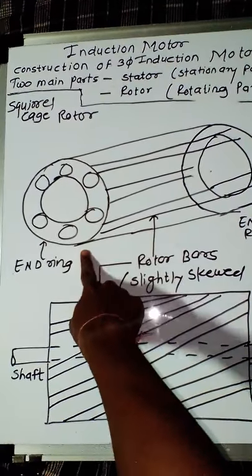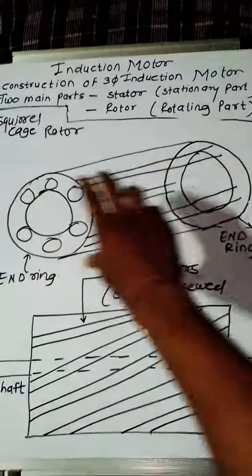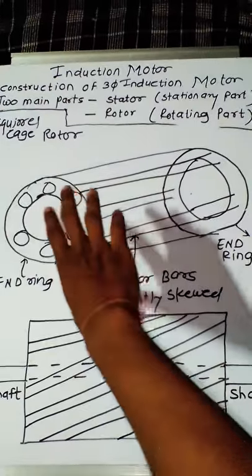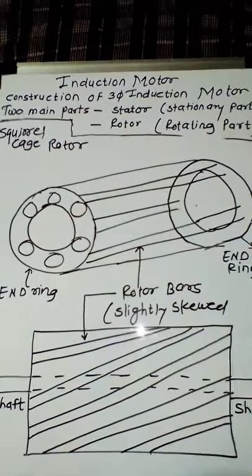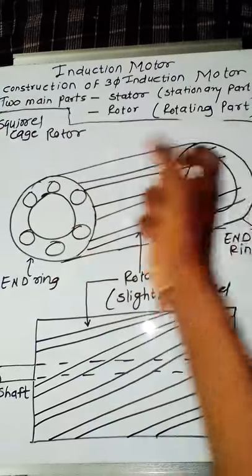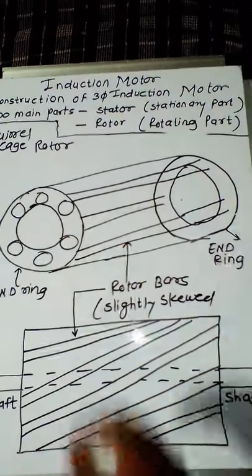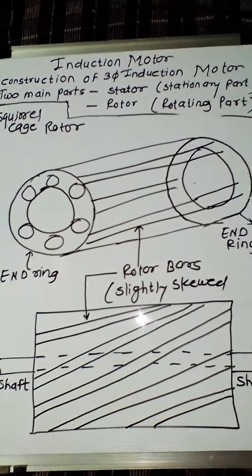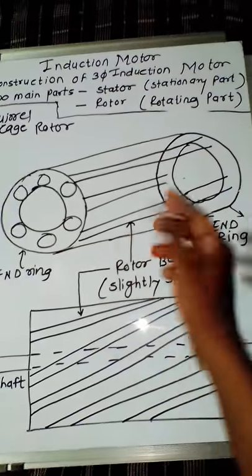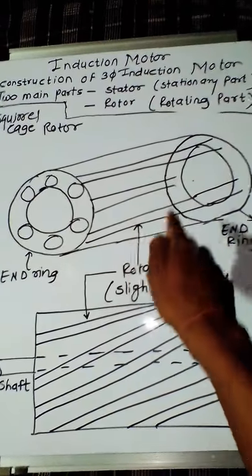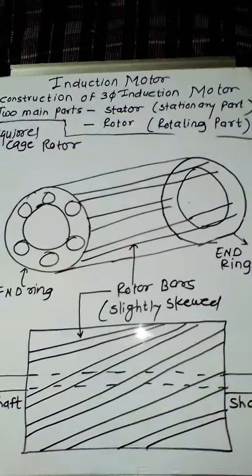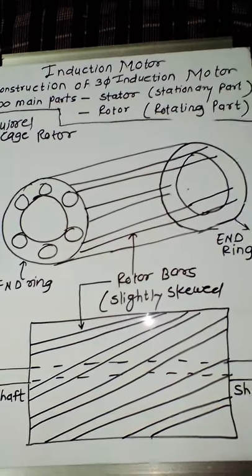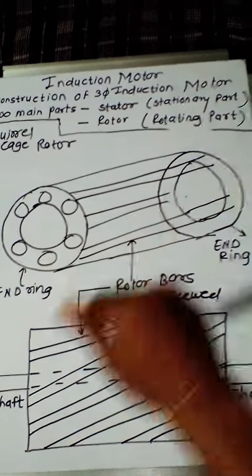The rotor bars are short-circuited on the end rings. As you can see, there are two end rings, and the rotor bars are short-circuited to these two end rings. Because the rotor bars are short-circuited to themselves, there is no arrangement to add any external resistance in series with the rotor circuit. This is a basic drawback of the squirrel cage induction motor — there is no provision to add external resistance to the rotor circuit.